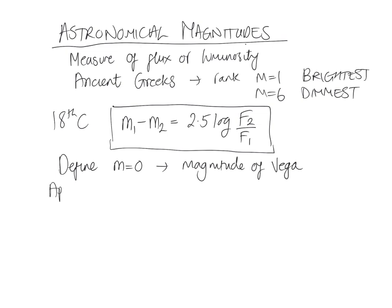This is the apparent magnitude, the measured magnitude, or the observed magnitude, and we traditionally use little m for that.